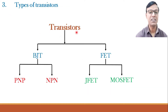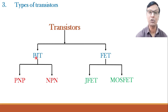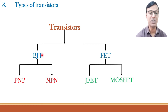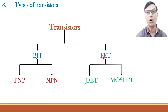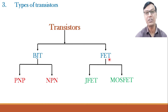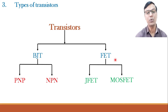Let us see the types of transistors. Transistors are mainly of two types: BJTs and FETs. BJT means bipolar junction transistor. As the name suggests, bipolar means P-type and N-type — two polarities, with two junctions P-to-N and N-to-P. Field effect transistor, as the name suggests, is the transistor that works on the field — the electric field or voltage applied to it. Whereas bipolar junction transistors are current driven transistors, field effect transistors are voltage driven transistors.